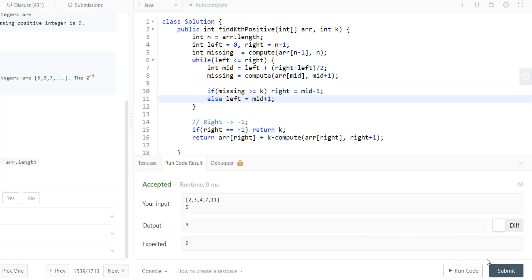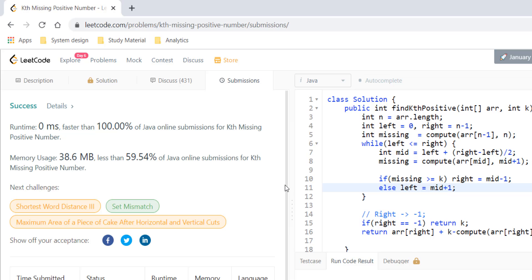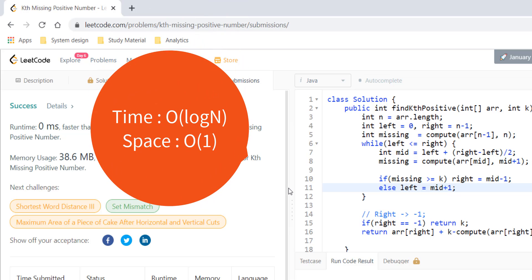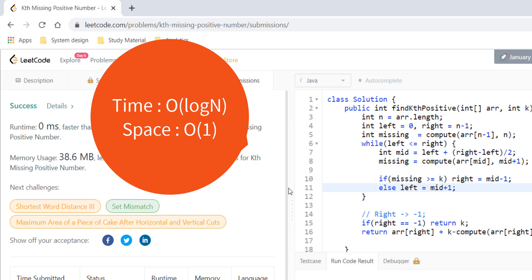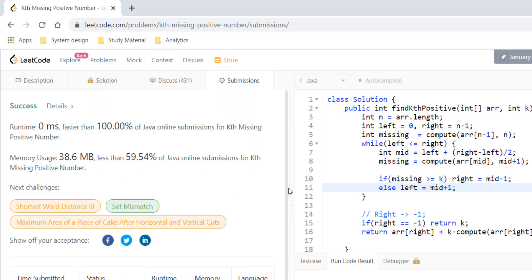And it is giving us a perfect result. Let's try to submit this code, and it got submitted. The time complexity for this approach is O(log n) as we are using binary search, and the space complexity is O(1) as we are not using any extra space. That's it for today guys, thanks for watching, see you in the next one.